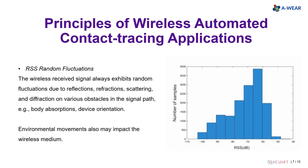The wireless received signal always reveals random fluctuations due to reflections, refraction, scattering, and diffraction on wireless obstacles in the signal path. Moreover, particular movements in the environment — such as people and cars moving around, and doors opening and closing — also impact the wireless medium.